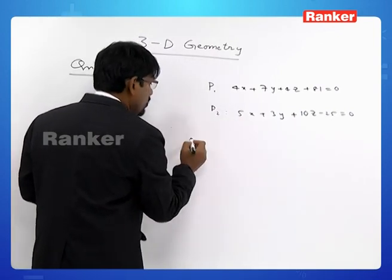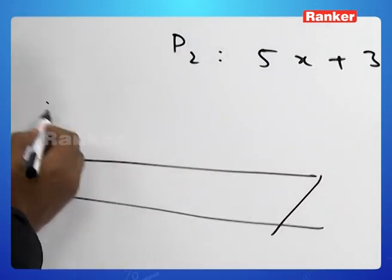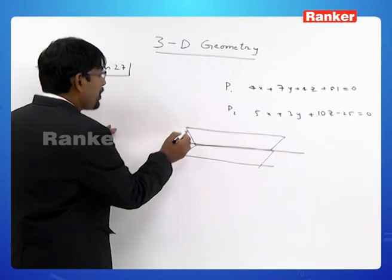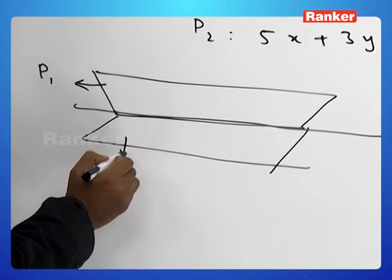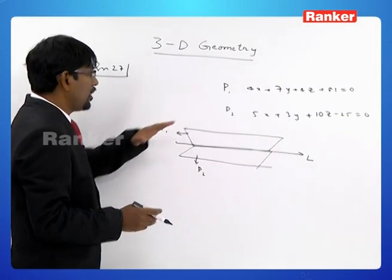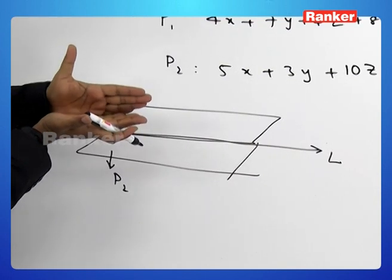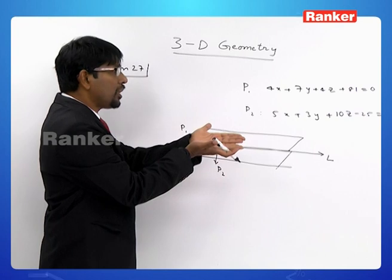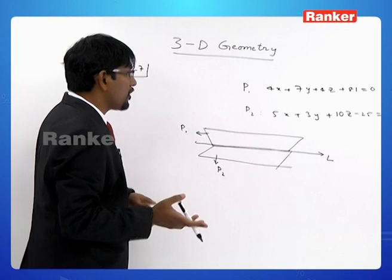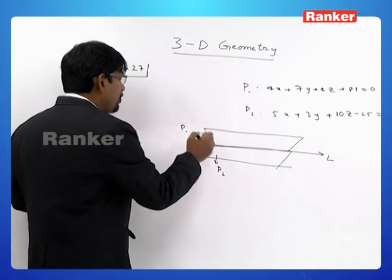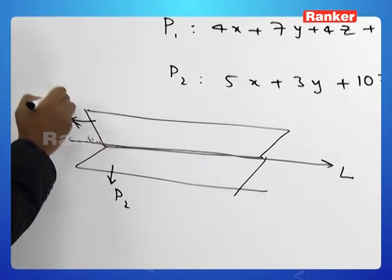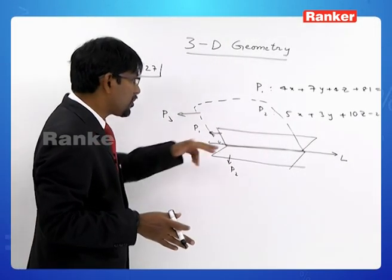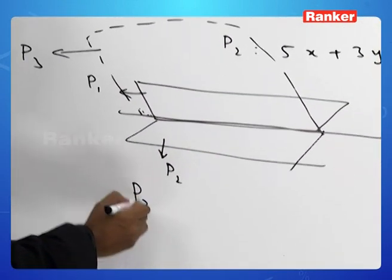So let us say these two planes P1 and P2 are intersecting in a line L. Plane P1 as of now is in one position. It is rotated through an angle of 90° about this line of intersection. Because of the position of that plane changing, the equation also would change. We want the equation of plane P1 in its new position.